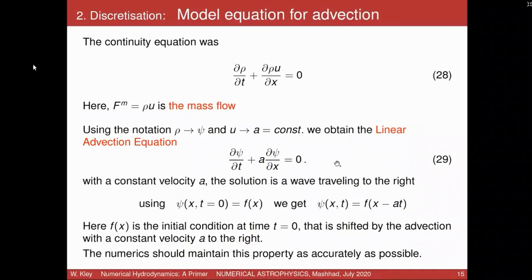This is called a linear advection equation where U is a constant velocity, and the solution of this equation is known analytically, so it can serve as a test problem. Initially at T=0 we have a function F(x). At a later time T, this initial profile F(x) is just transported with fluid velocity A to the right if A is positive, or to the left if A is negative. The analytical solution is given by the initial profile F shifted by a distance A·T.